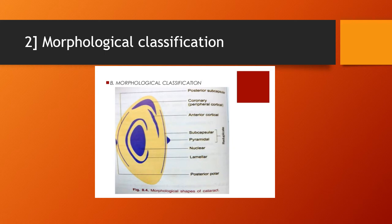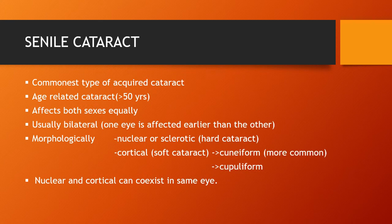Polar cataract can be anterior polar cataract or posterior polar cataract. Senile immature cataract is the most common type of acquired cataract, usually seen in patients more than 50 years of age. It can affect both sexes equally and usually it is bilateral — one eye is affected earlier than the other. Morphologically it is divided into nuclear or sclerotic cataract and cortical cataract. Nuclear cataract is the hard cataract and cortical cataracts are soft cataracts, of two types — cuneiform and cupuliform — of which cuneiform is more common. Nuclear and cortical cataract can co-exist in the same eye.